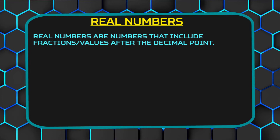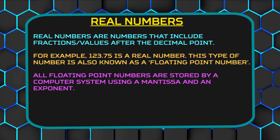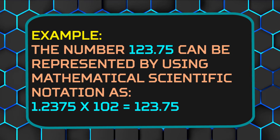Now let's get to real numbers. Real numbers are numbers that include fractions or values after the decimal point. For example, 123.75 is a real number. This type of number is also known as a floating point number. All floating point numbers are stored by a computer system using a mantissa and an exponent. The following example is used to illustrate the role of the mantissa and the exponent — it gives a general idea. The number 123.75 can be represented using mathematical scientific notation: 1.2375 times 10² equals 123.75.